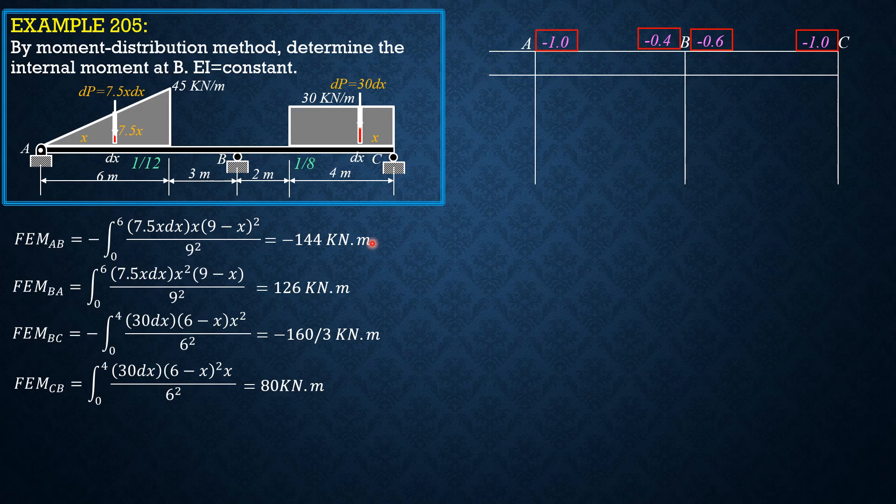Fixing moments. So we have at A, negative 144 fixing moment, negative 144, 126 here, negative 160 over 3 here, and 80 here. Then distribute.